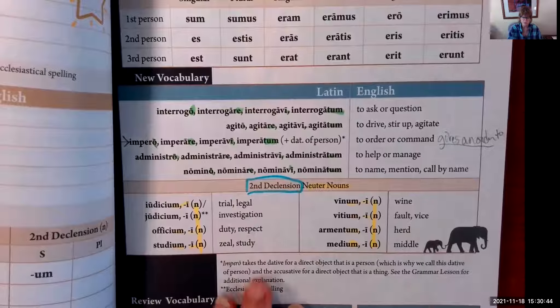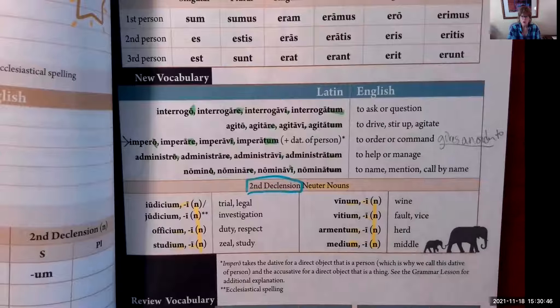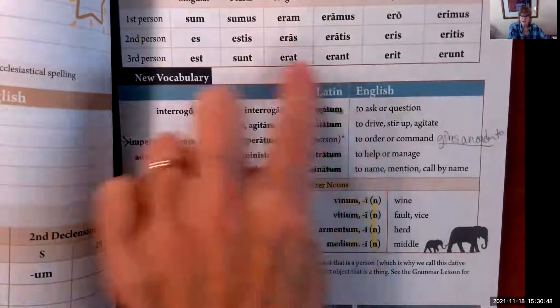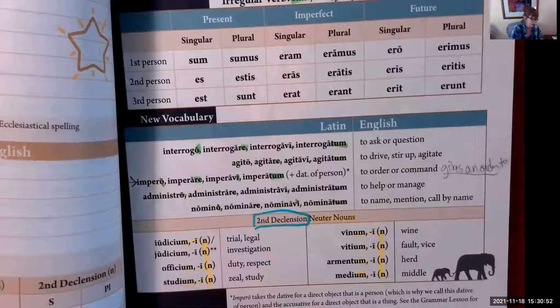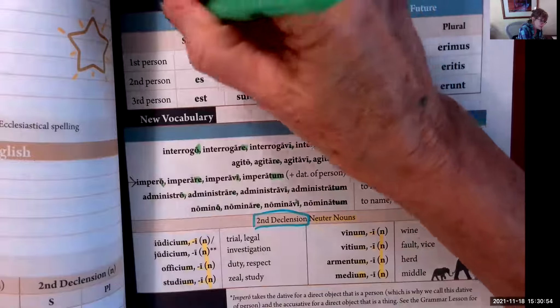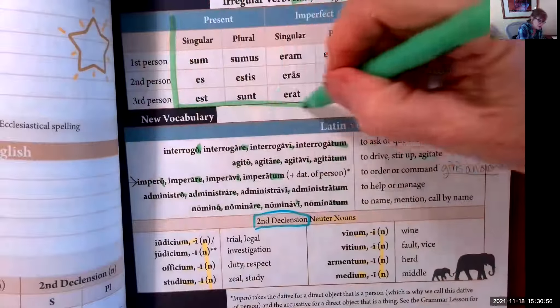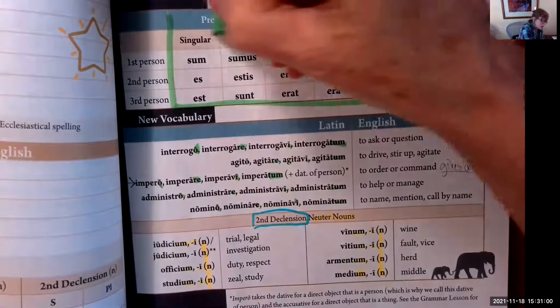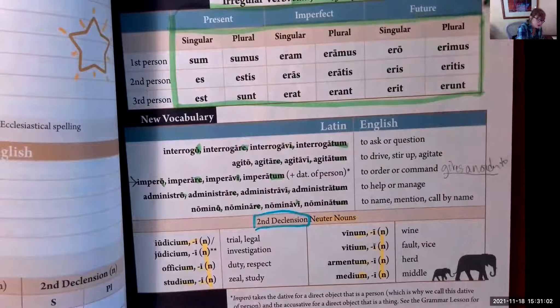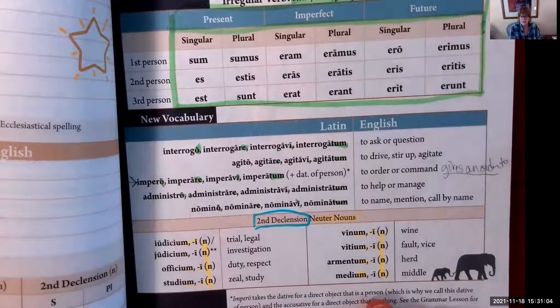Those are all your vocabulary words that must all be conjugated and declined. If you haven't done it, please do it. That is how you guarantee knowledge of your vocabulary: you conjugate all verbs and you decline all nouns.